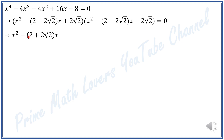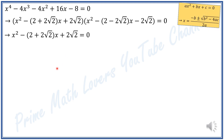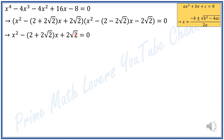Either x squared minus (2 plus 2√2)x plus 2√2 equals 0, or the other factor equals 0. This is a quadratic equation. Using the quadratic formula for ax² plus bx plus c equals 0, x equals negative b plus or minus square root of b squared minus 4ac, all divided by 2a. In our first equation, a is 1, b is negative (2 plus 2√2), and c is 2√2.